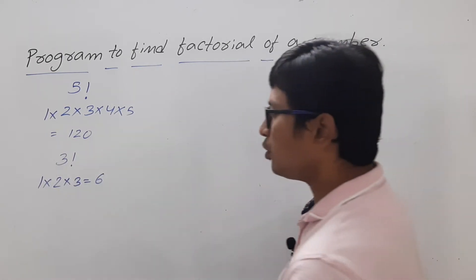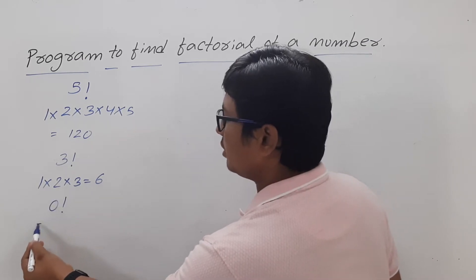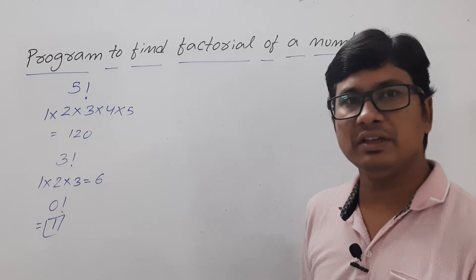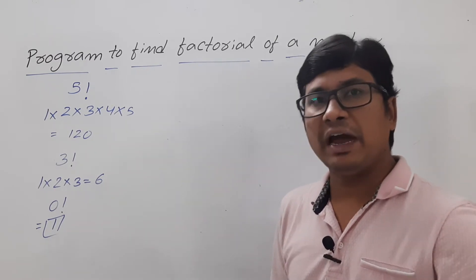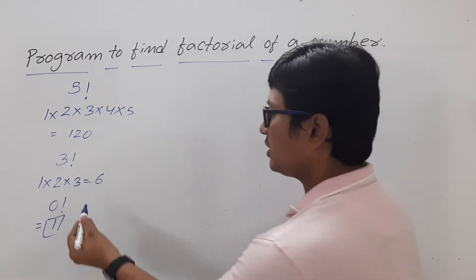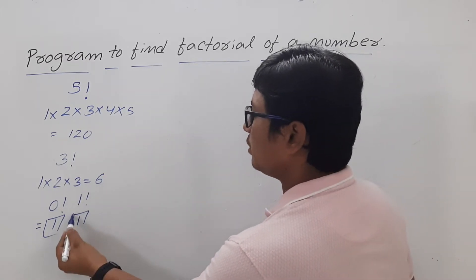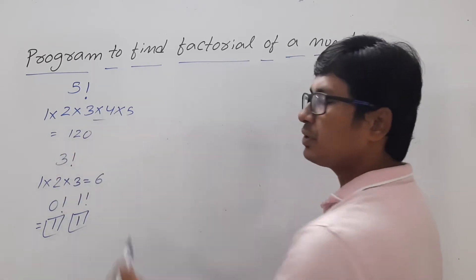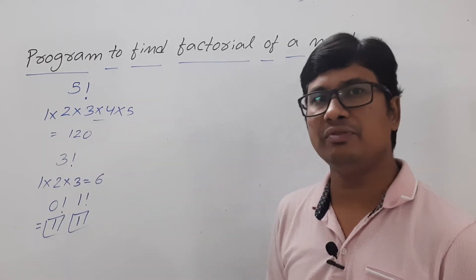Remember one important point: 0 factorial is equal to 1. Further, we cannot compute the factorial of a negative number. So if it is 0 factorial or 1 factorial, the result will be 1. For a positive number we compute normally, but for a negative number we cannot compute the factorial.